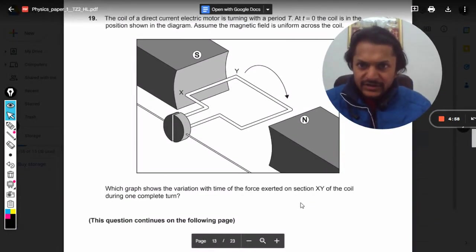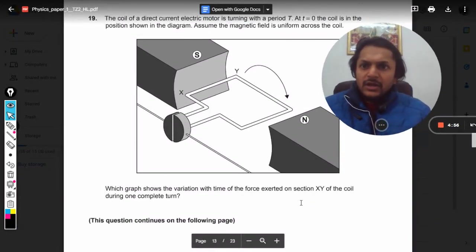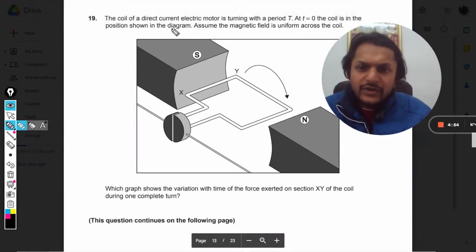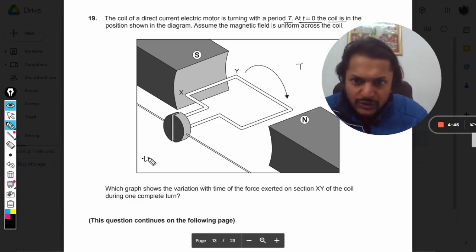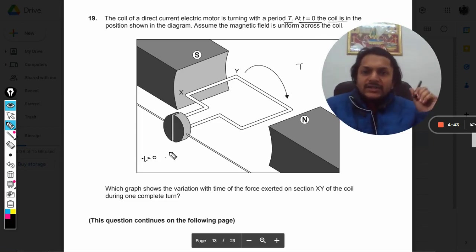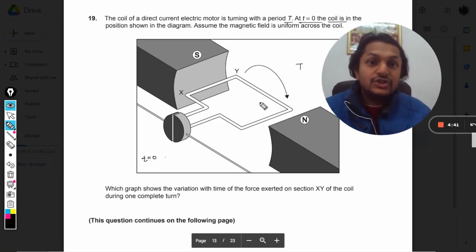Okay dear students, let us see what is in this question. The coil of a direct current electric motor is turning with time period T, and at t = 0 the coil is in the position shown in the diagram.